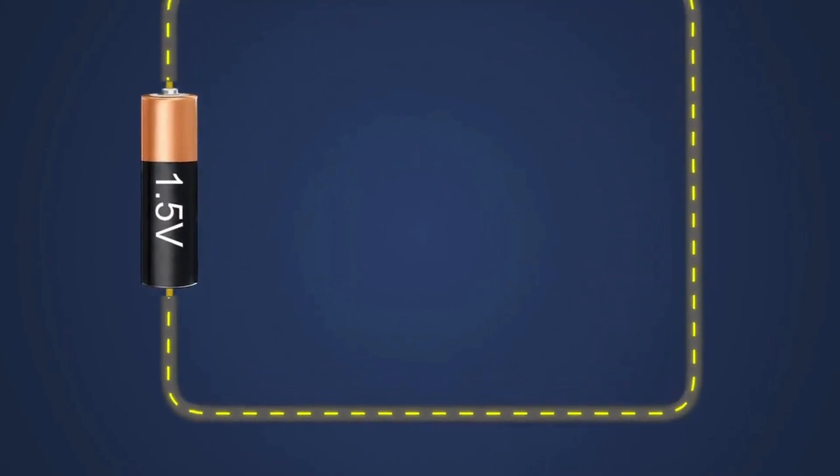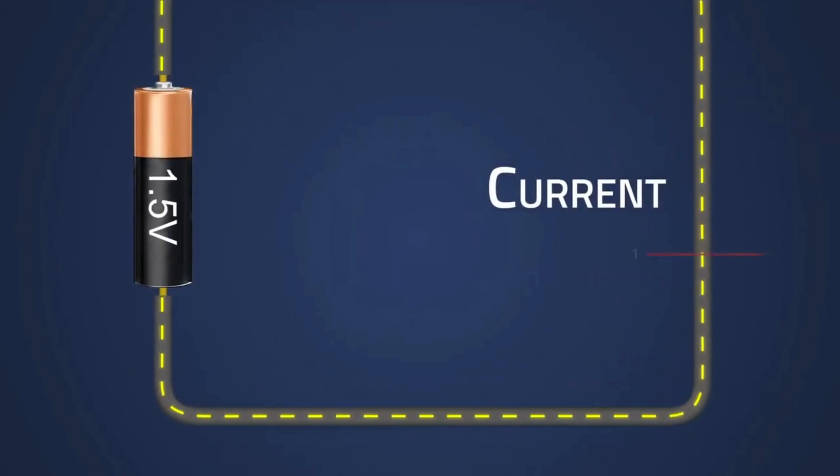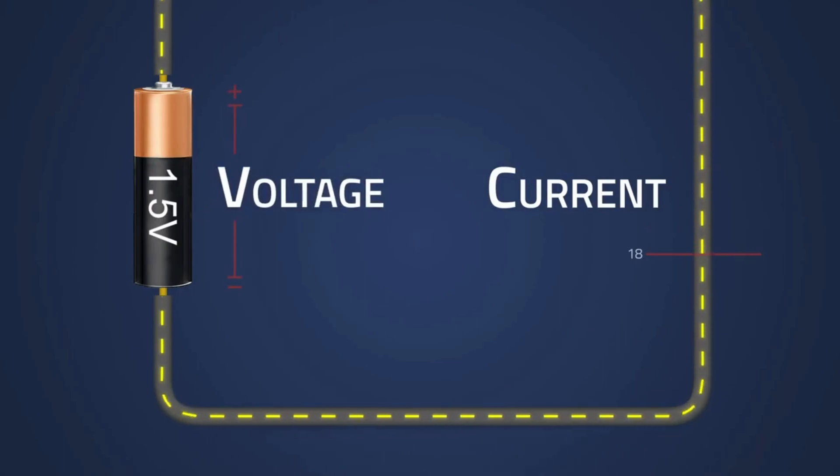So to summarize, current is simply a measurement of the flow of electrons passing a certain point, and voltage is the electrical potential difference between two points and is the driving force within a circuit.